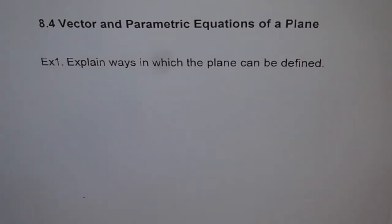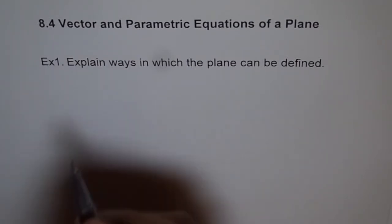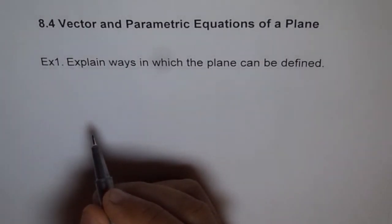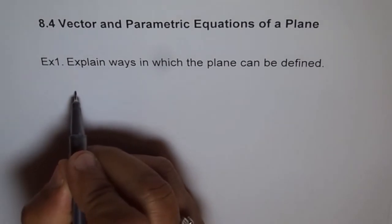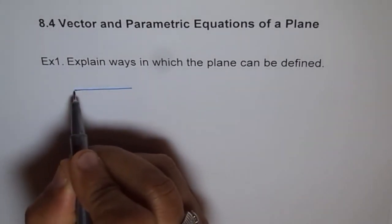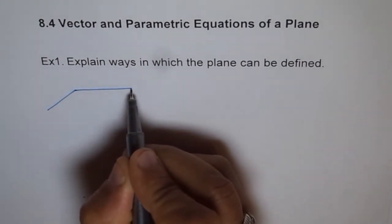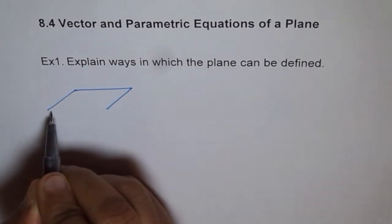So there are basically four ways in which a plane can be defined. One is that we have a line and a point not on the line. Then we can define a plane. Let's say this is our plane. We'll represent a plane with a parallelogram.